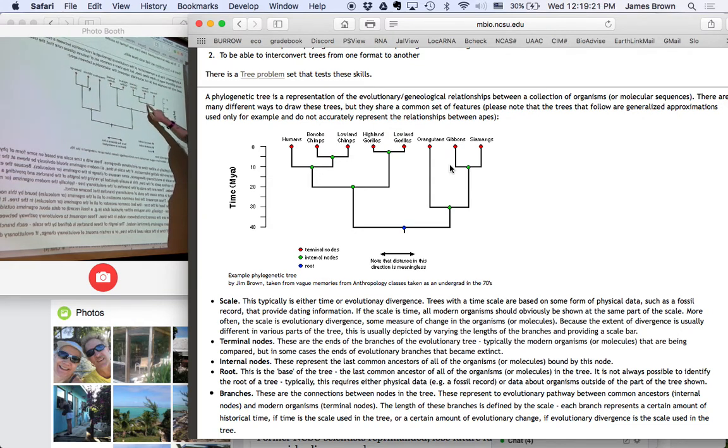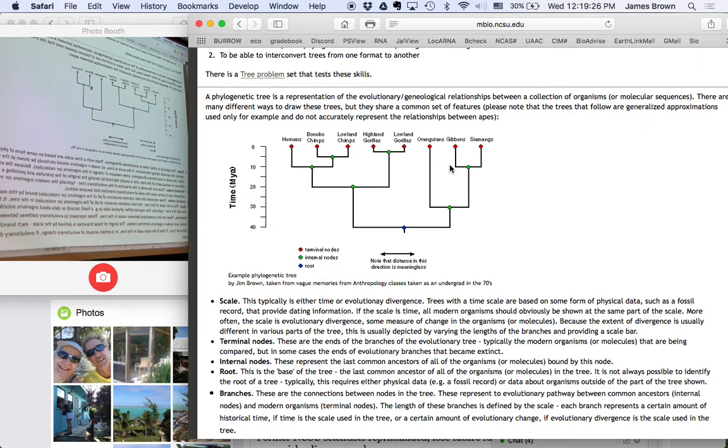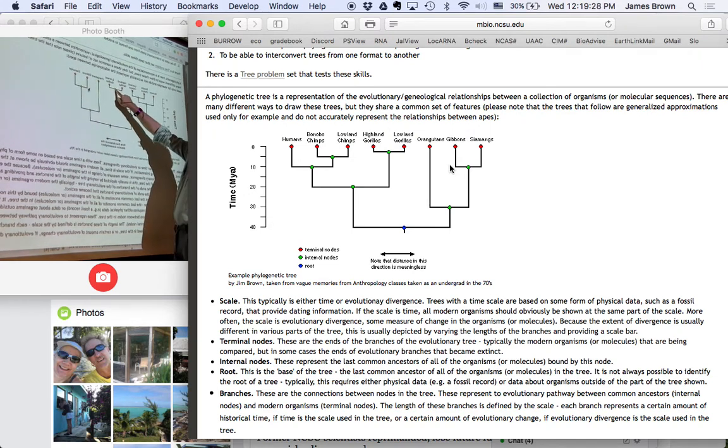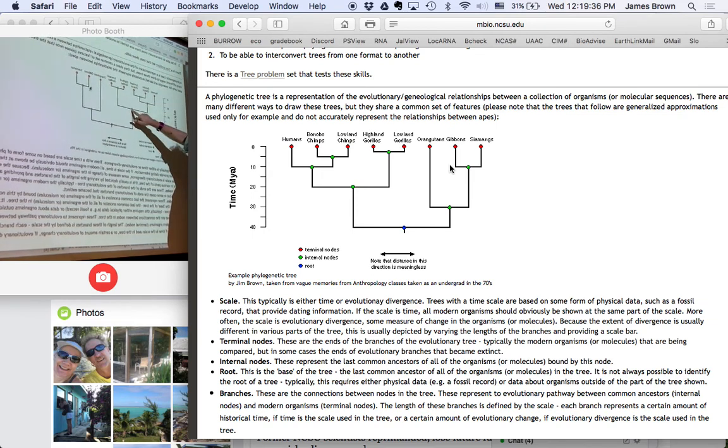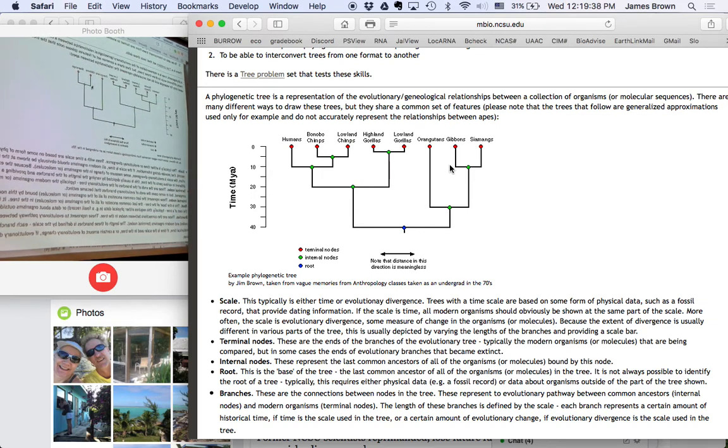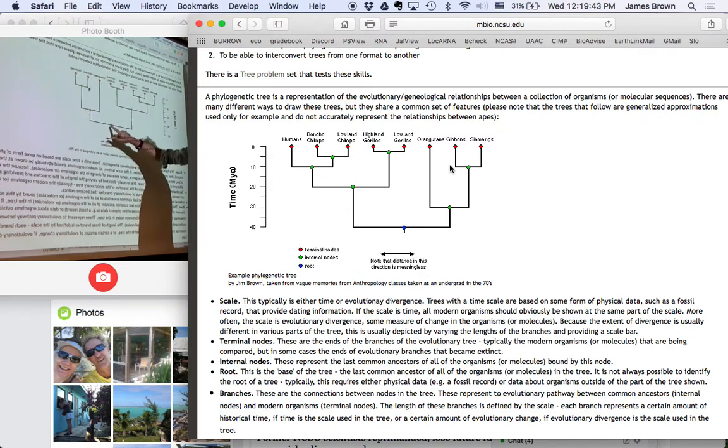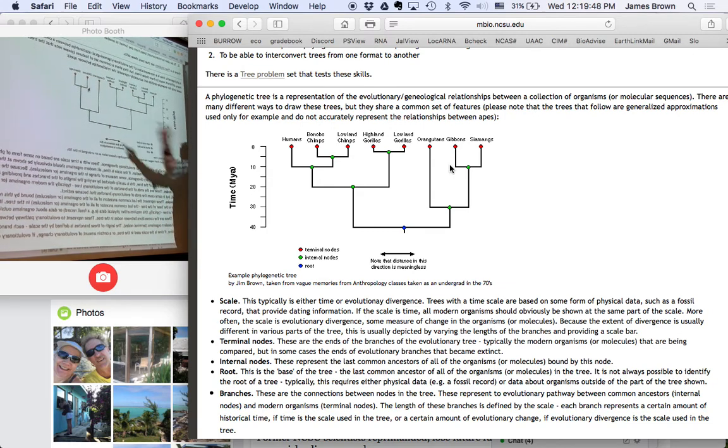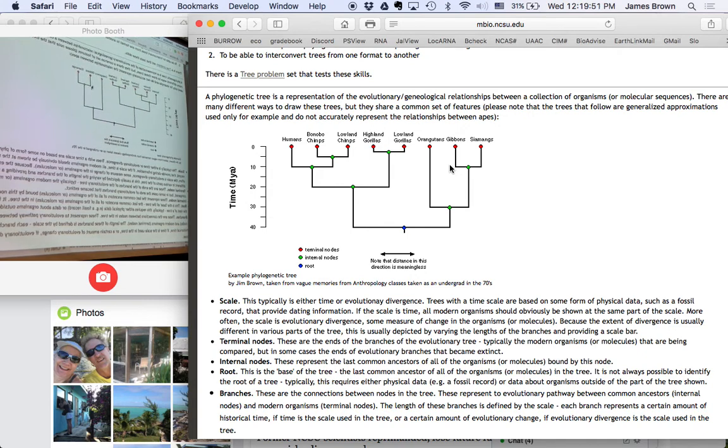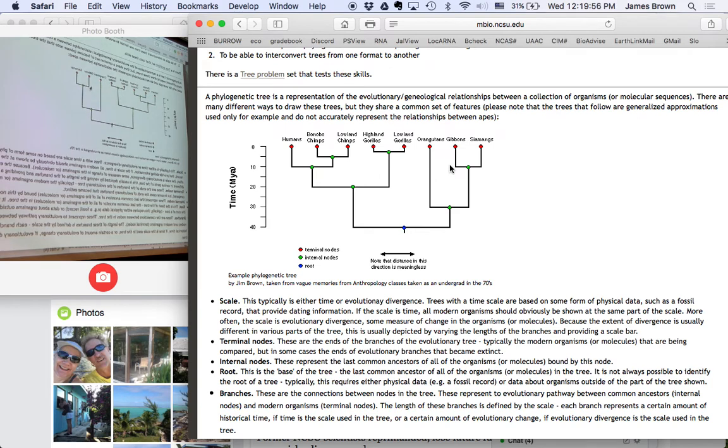You have internal nodes. Each of these represents a last common ancestor. So the last common ancestor of gorillas is right here. The last common ancestor of the chimps, gorillas, and humans is right here. The last of the gibbon-siamang group is here, and the last common ancestor of all the great apes is here. Now, in order to determine where that node is, you have to have an outgroup, right? And that outgroup may have been, you know, old world monkeys, for example.